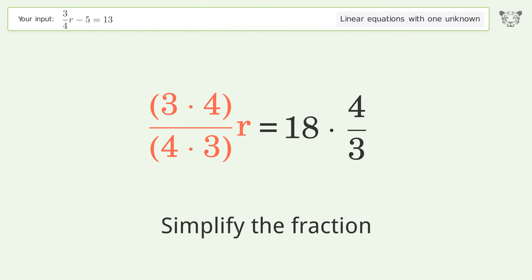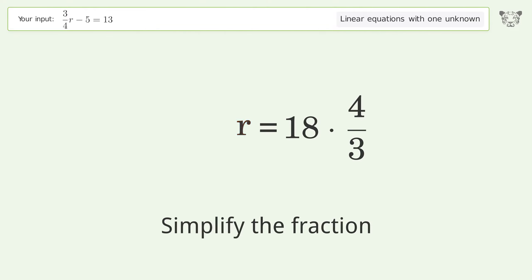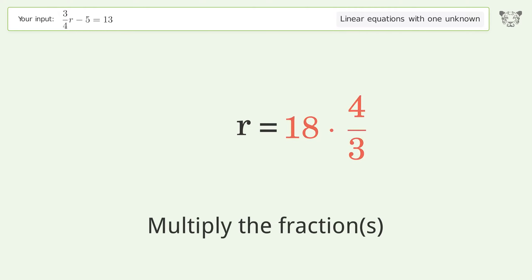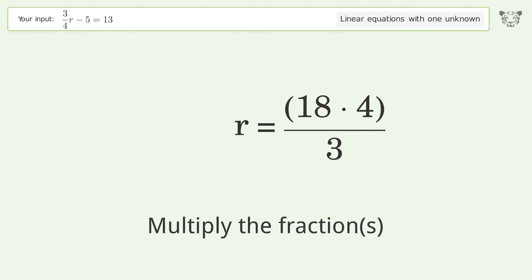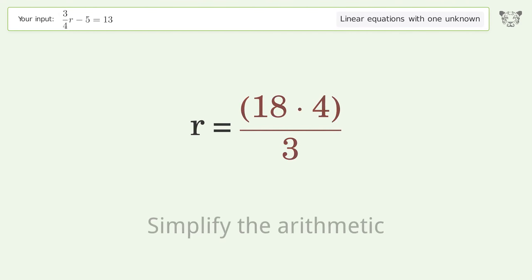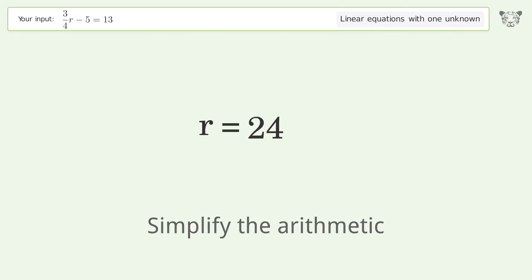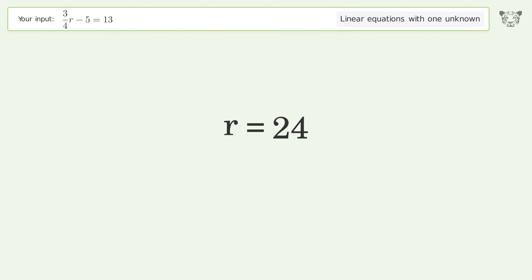Simplify the fraction, then multiply the fractions. Simplify the arithmetic, and so the final result is r equals 24.